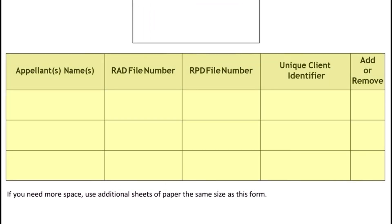On the cover page you need to provide your information and the information for each person appealing with you. You may leave the RAD file numbers blank if you have not received them yet. The RPD file numbers for each appellant can be found on the RPD Notice of Decision. The Unique Client Identifier, also called the Client ID, can also be found on the RPD Notice of Decision.